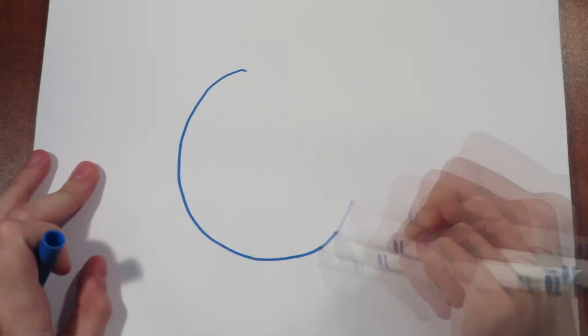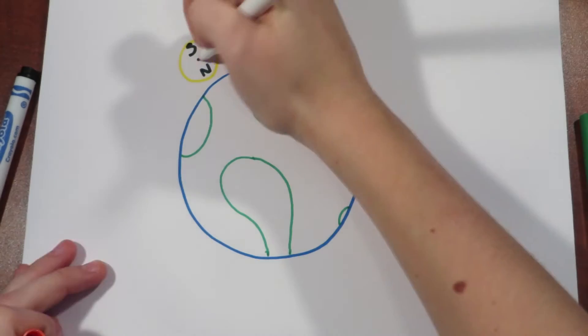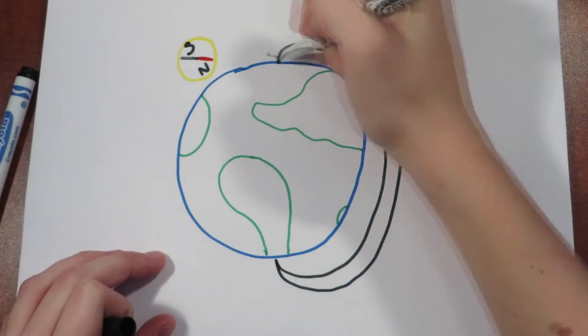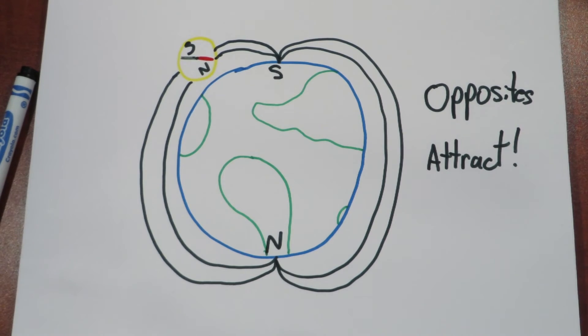The magnet within the compass is attracted to the southern magnetic field, which is located near the geological north. So what the compass is really pointing at is a south magnetic field, because of the principle of opposites attract.